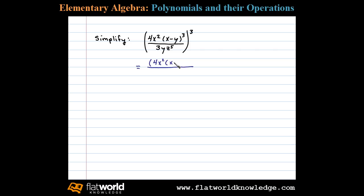4x squared times (x minus y) cubed, to the third power, over 3yz to the fifth, to the third power. Next we apply the power rule for a product in the numerator.